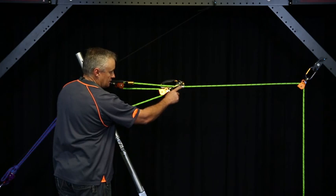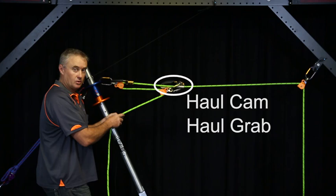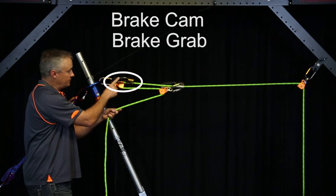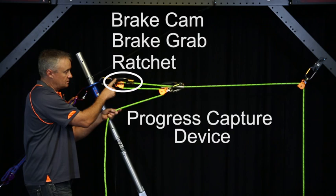Now I want to talk briefly about these two devices. This position here is often referred to as a haul cam or a haul grab. This one back here a brake cam or a brake grab. It's also referred to as a ratchet or a progress capture device.